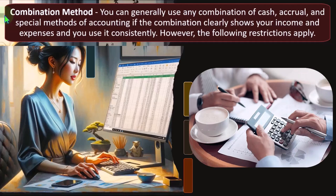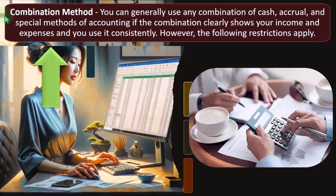So, combination method: you can generally use any combination of cash, accrual, and special methods of accounting, as long as the combination clearly shows your income and expenses and you use it consistently.